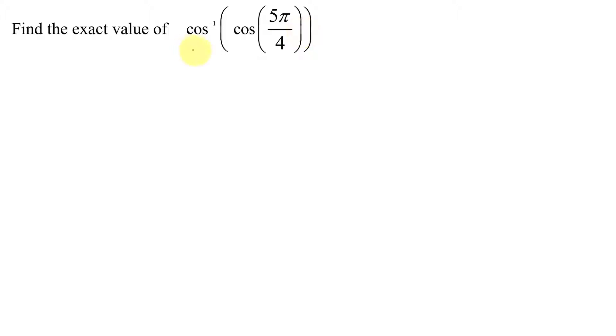At first glance, this looks like it might be a very easy problem. I have an inverse cosine function and I have a cosine function. And some students think these are going to undo each other and my answer is just going to be 5π over 4. But be very careful.